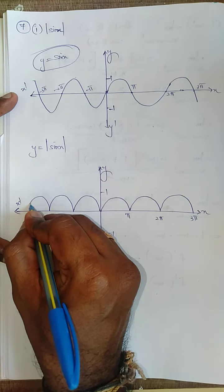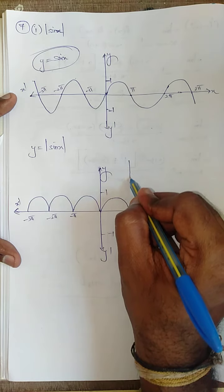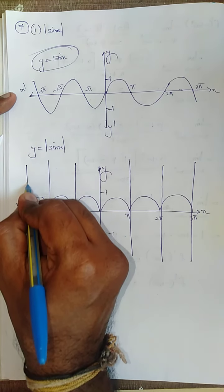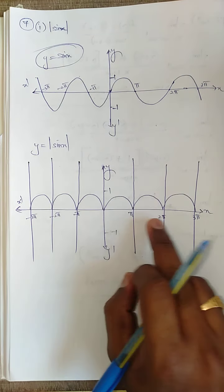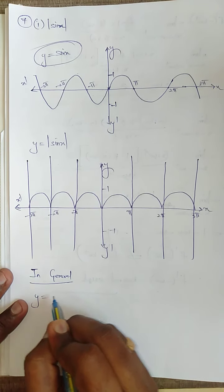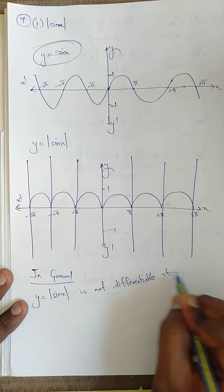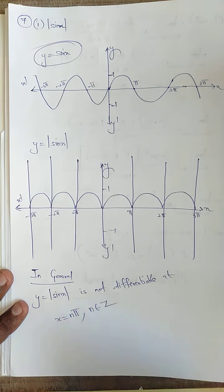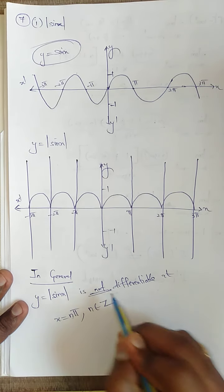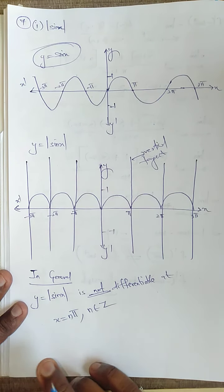This curve will flip upward because of the modulus. This will be minus π, minus 2π, minus 3π. If I draw one vertical tangent here — this is a vertical tangent, this is a vertical tangent, this is a vertical tangent — these are not differentiable. These are not differentiable at π, 2π, 3π. Therefore in general, y equals modulus of sin x is not differentiable at x equals nπ, where n belongs to Z. You can apply n equals one, two, three, four, minus one, minus two, minus three. It is not differentiable because of the vertical tangent — vertical tangent is not differentiable.